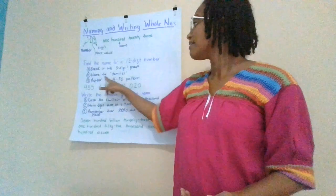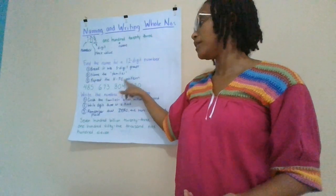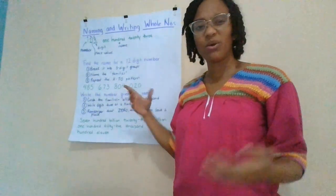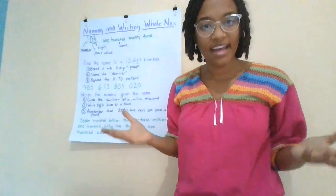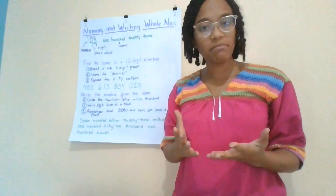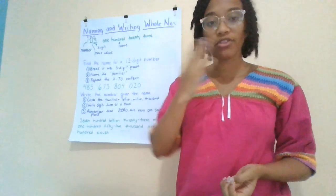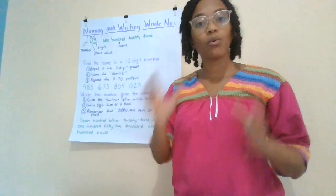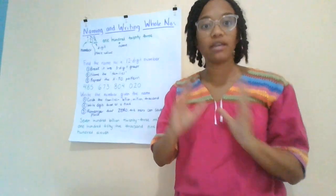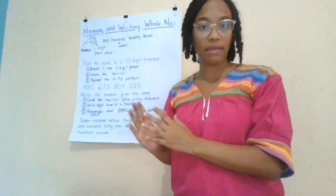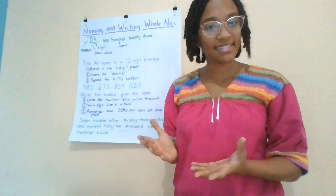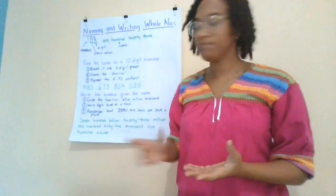So now that we've named the families, we repeat the hundreds, tens, ones pattern. That basically means that we're going to read four three-digit numbers in order, but we're going to punctuate it with the family names. Listen to how I do that.